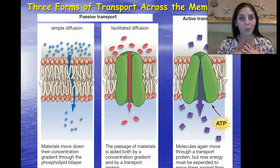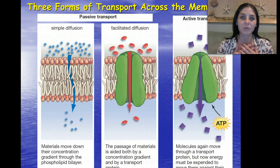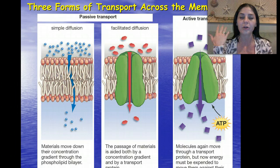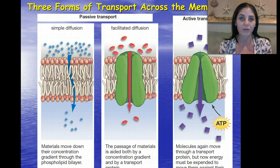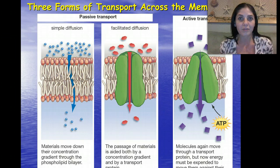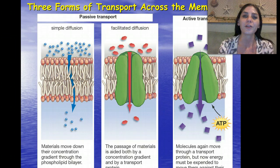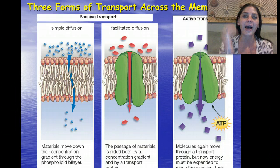But people, humans, have to use the door. Now, it doesn't require any energy if the door is open. We just have to enter the classroom through that because we can't really fit under the door or through any of the nooks and crannies in the ceiling. The third type of transport is called active transport.